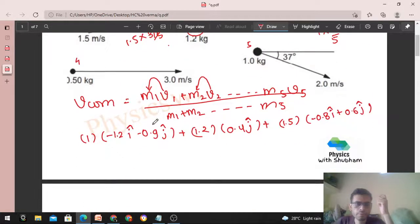Fine. Now the 4th particle, that will be 0.5, its mass, and velocity is 3 i cap.